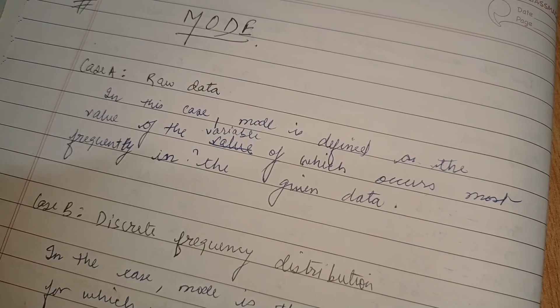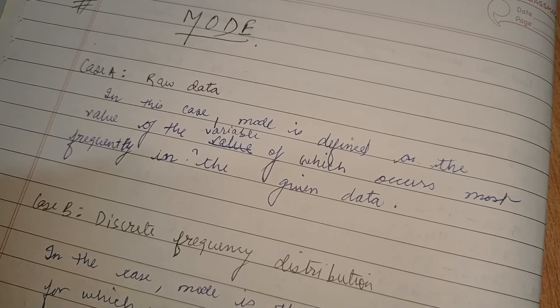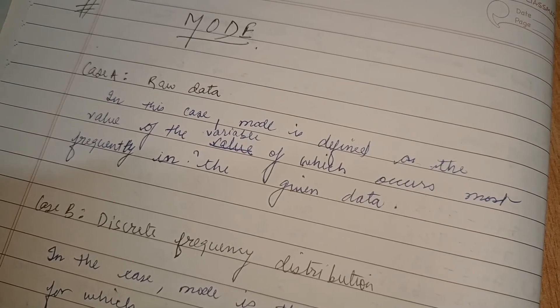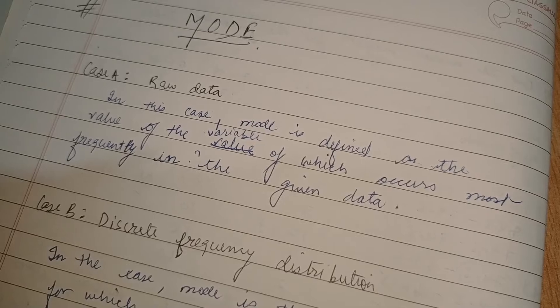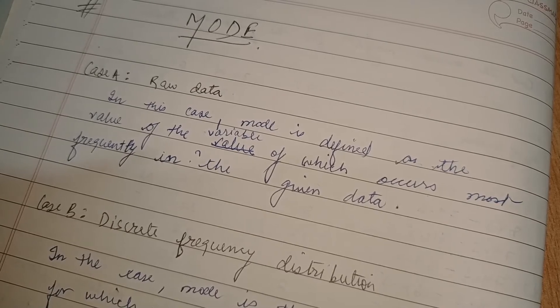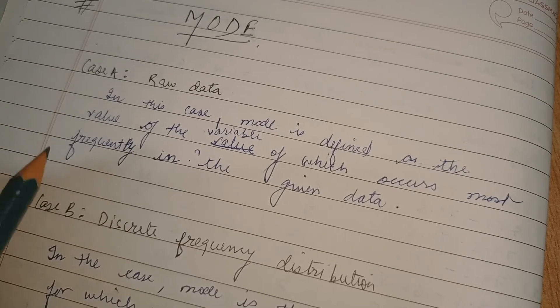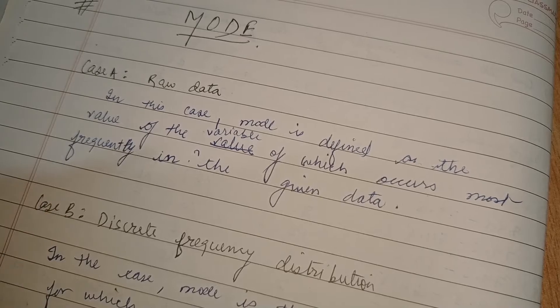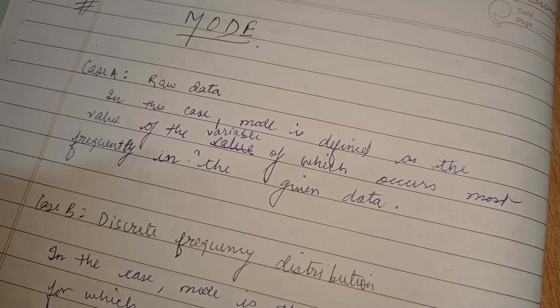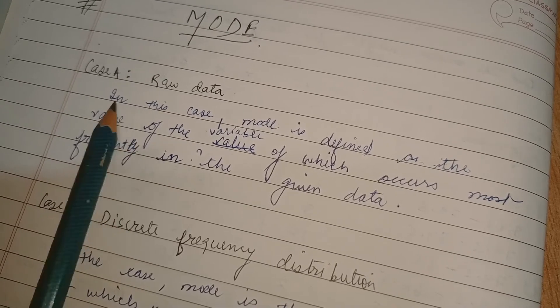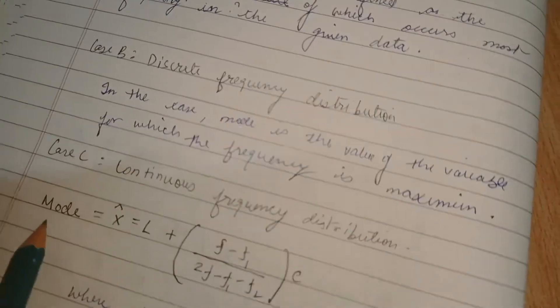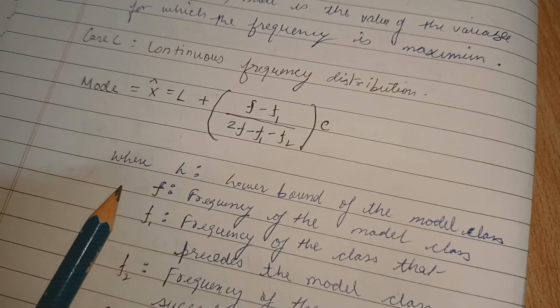Welcome back guys, so today we'll be learning about mode. What is mode? Mode is something which occurs very frequently, that is repeated many times. In this, there are three types of data: raw data, discrete data, and continuous frequency distribution.